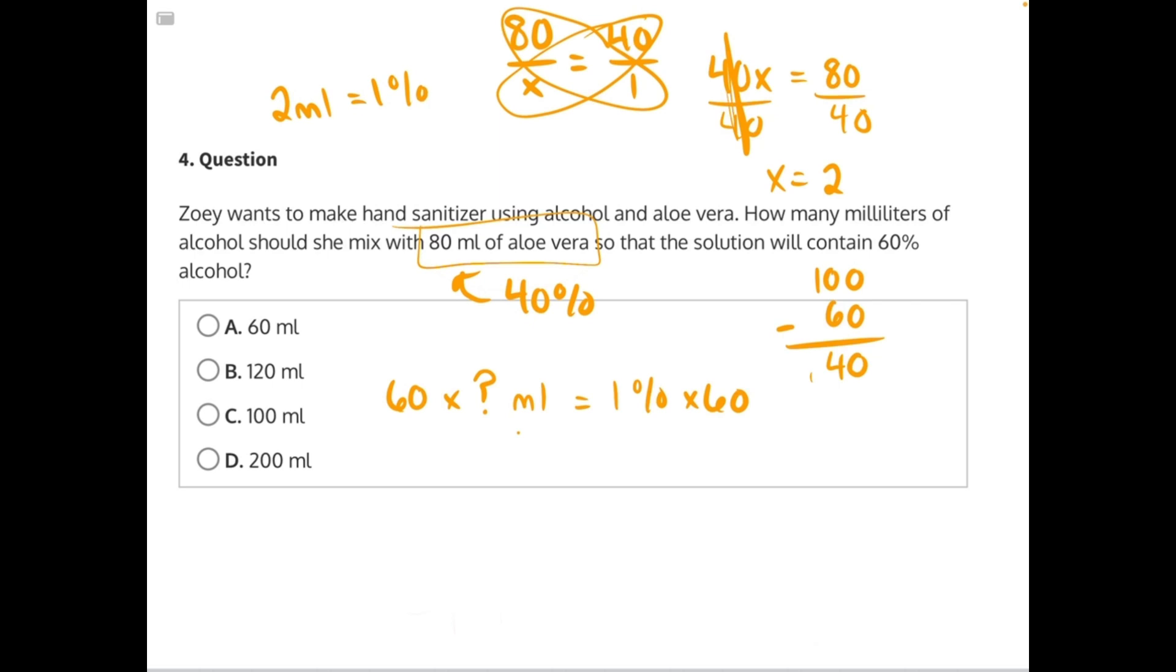So if we multiply 1 by 60, we'll get 60% of the solution is 60 times 2 milliliters, which would be 120 milliliters. Answer choice B.